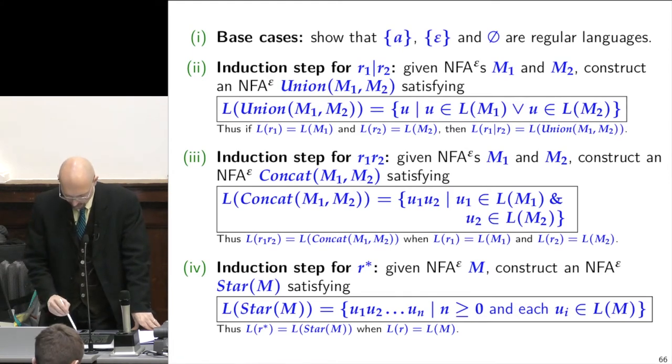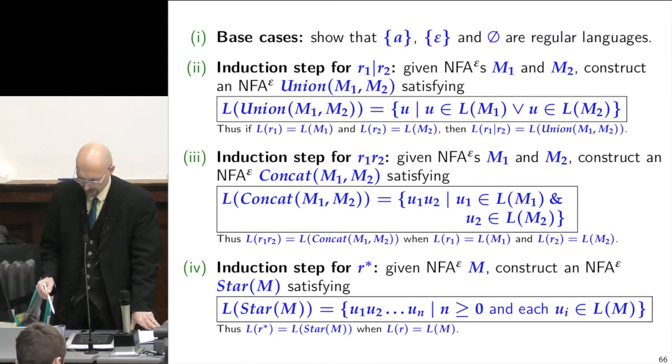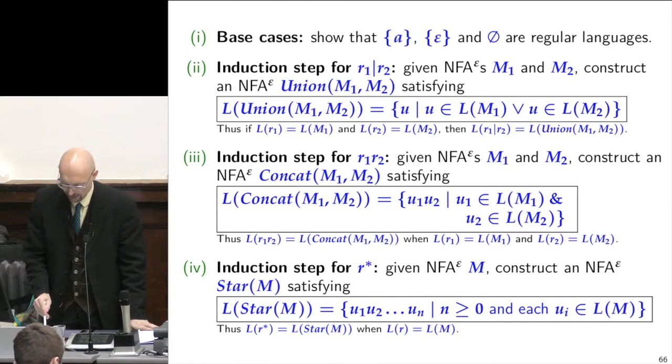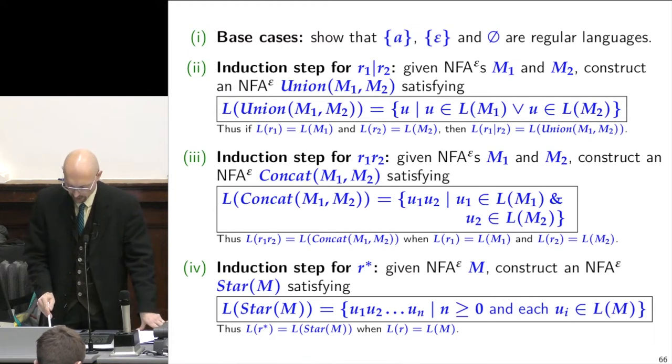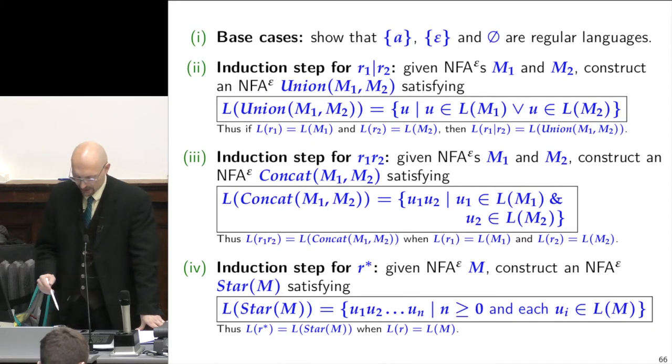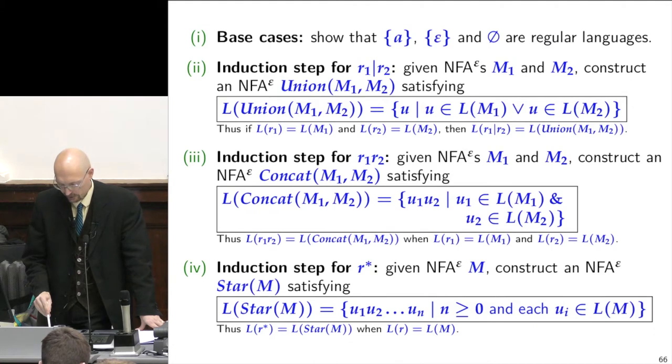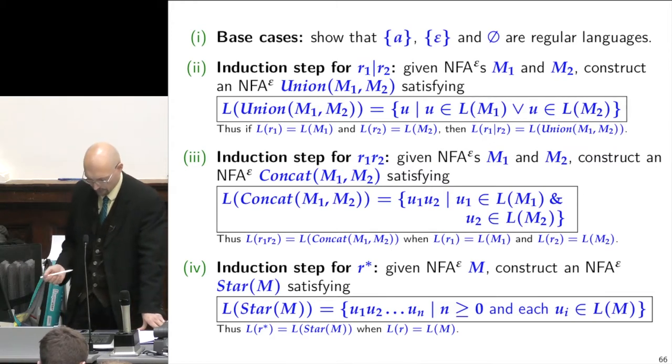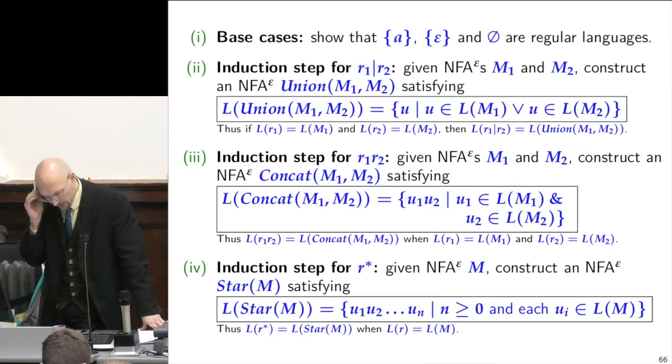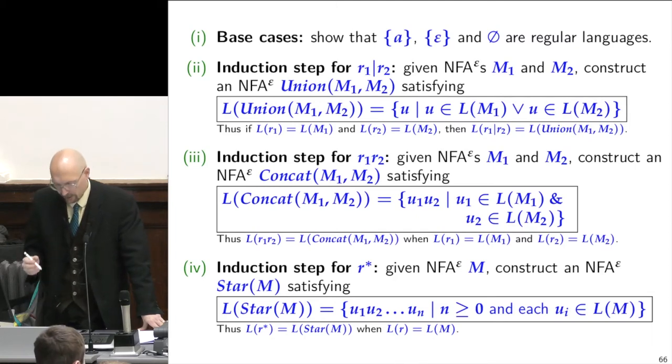We're going to use these ones as the axioms and the base case for our induction and build a machine that recognizes each of these, a different machine for each. And then we're going to say, for the union regular expression, if I'm able to build a machine that recognizes R1 and I'm able to build a machine that recognizes R2, here's how to build the machine that recognizes the union of R1 and R2. So before you peek ahead and look, what do you think would be a machine that recognized the symbol A?